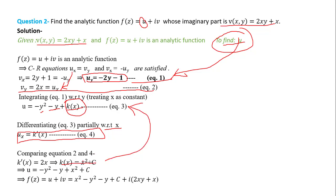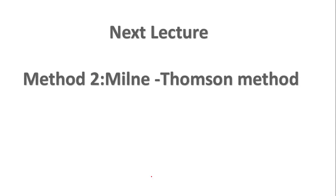Substituting k(x) back into equation 3 gives u = -y² - y + x² + c. Now f(z) = u + iv, where u = x² - y² - y + c and v is the given imaginary part. This is how we find the real part when the imaginary part is given. In the next lecture we will learn another method called the Milne-Thomson method. Thank you.